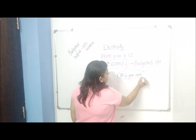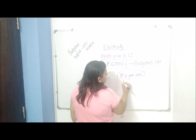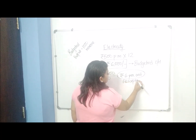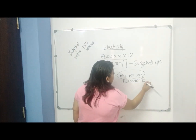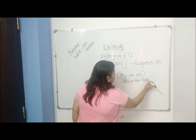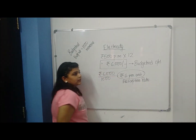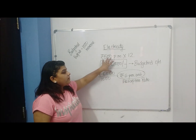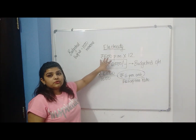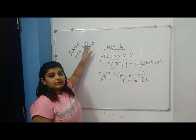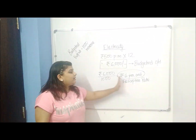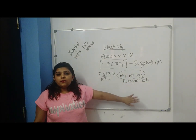Now we know that the burden of rupees 6000 has to be distributed among these 1000 markers. So I distribute rupees 6000 among 1000 markers and I get a rate of rupees 6 per unit. This is the absorption rate, also known as the recovery rate — total budgeted overheads divided by the budgeted output to get my absorption rate.